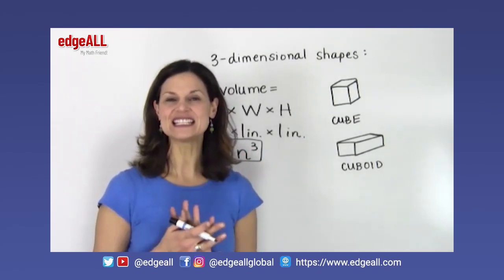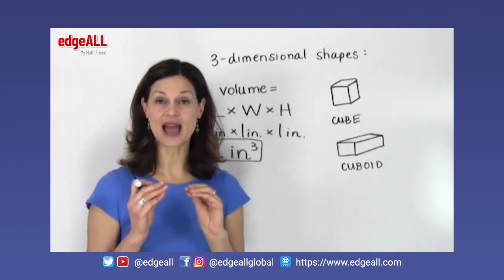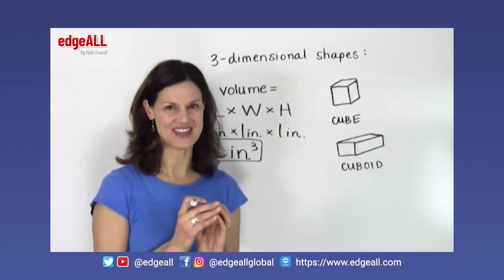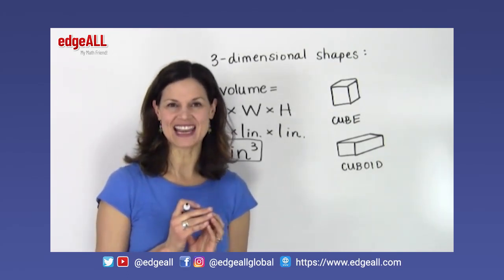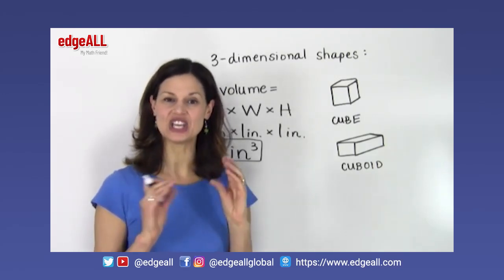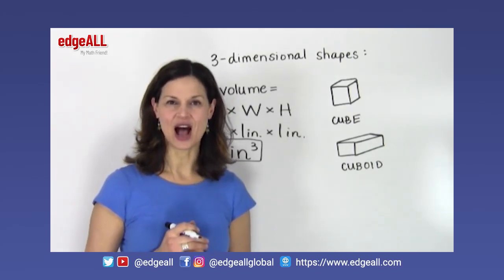The volume of any solid is equal to the number of 1 by 1 by 1 cubes that will fit inside of it. So let's take a look at an example of looking at how many 1 by 1 by 1 cubes fit inside of a three-dimensional object.